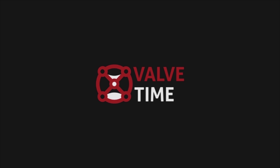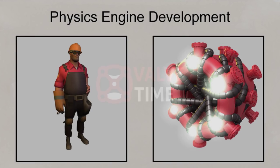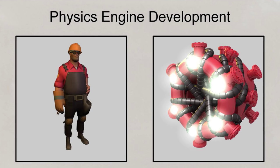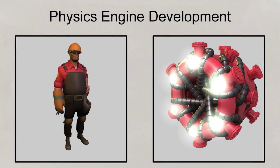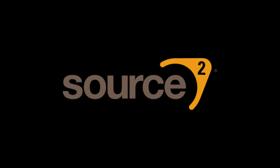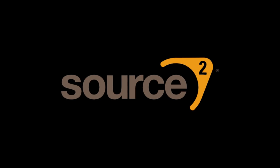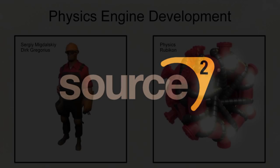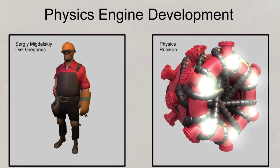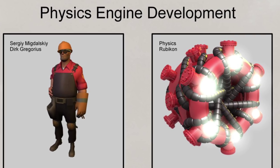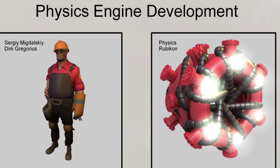Welcome to a special ValveTime Spotlight exclusive, in which we'll be taking a close look at one of the least discussed but most important components of Valve Corporation's upcoming Source 2 engine: Rubicon, the engine's physics system developed in-house at Valve.